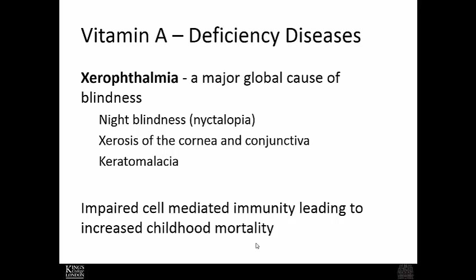In terms of deficiency, xerophthalmia is the medical terminology used for severe vitamin A deficiency. It is characterized clinically by night blindness, xerosis of the cornea and the conjunctiva, as well as keratomalacia. We'll get into more detail about this later in the lecture.